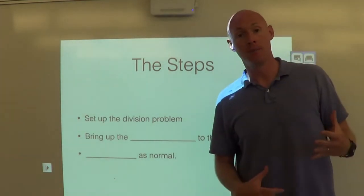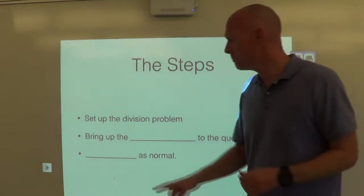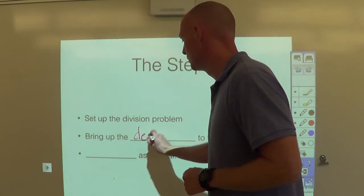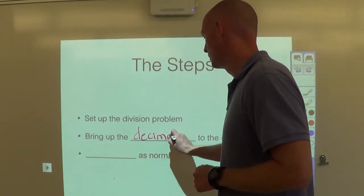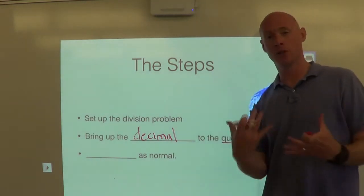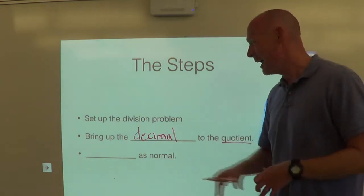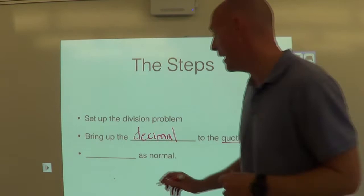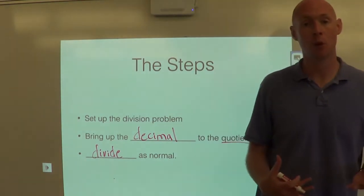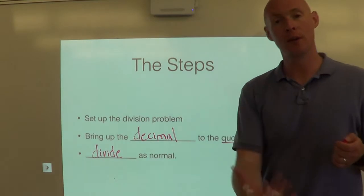Three simple steps to follow. Step number one, you're going to set up the division problem. Piece of cake. Step number two, you're going to bring up the decimal into the quotient. Most of you know a quotient is just the answer to a division problem. So you're going to take that decimal from the bottom, move it up to the top. And finally, step three, you're going to divide as normal. Make sure you have those down, and then I'm going to work you through a few examples.